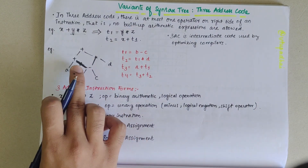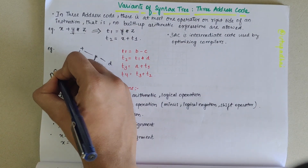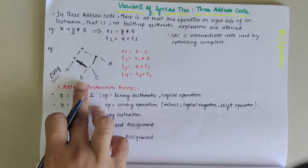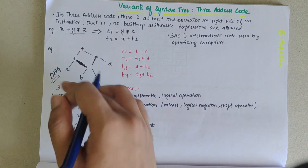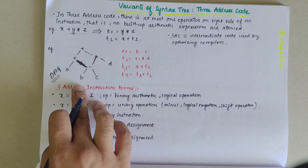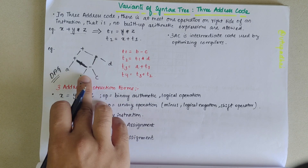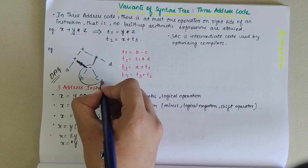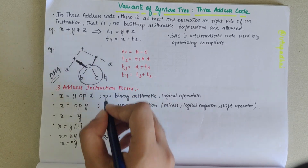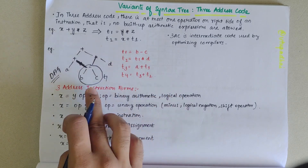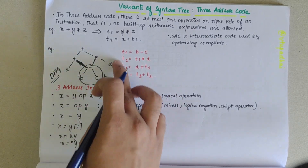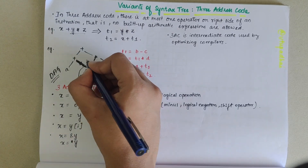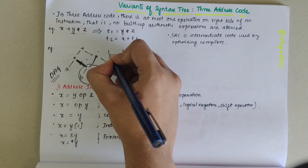If we look at this example, a DAG is given and from the DAG we need to write the three address code. We always start from the bottom. We have b minus c from the leaf nodes, so t1 can be taken as b minus c — this value is stored in t1. Next, t2 is equal to t1 star d, so t1 star d gives us t2.